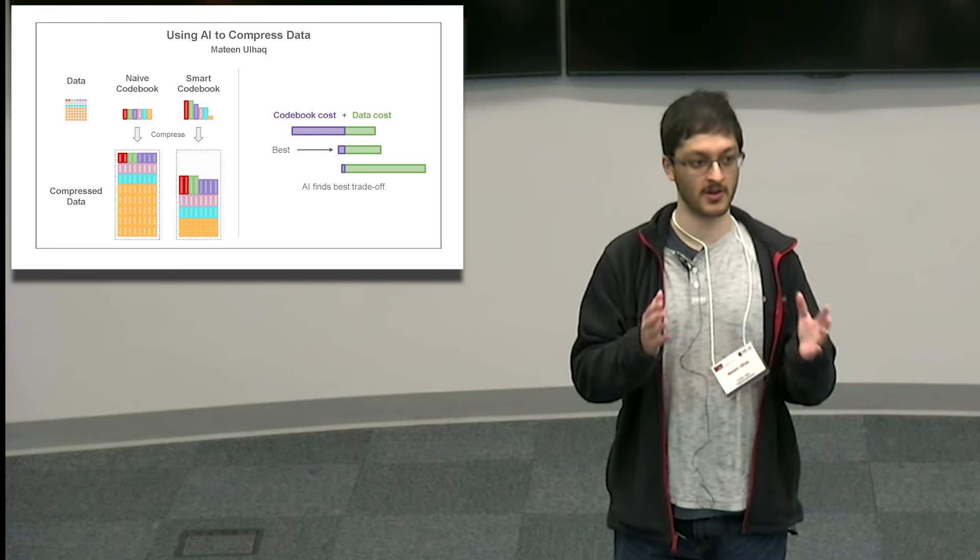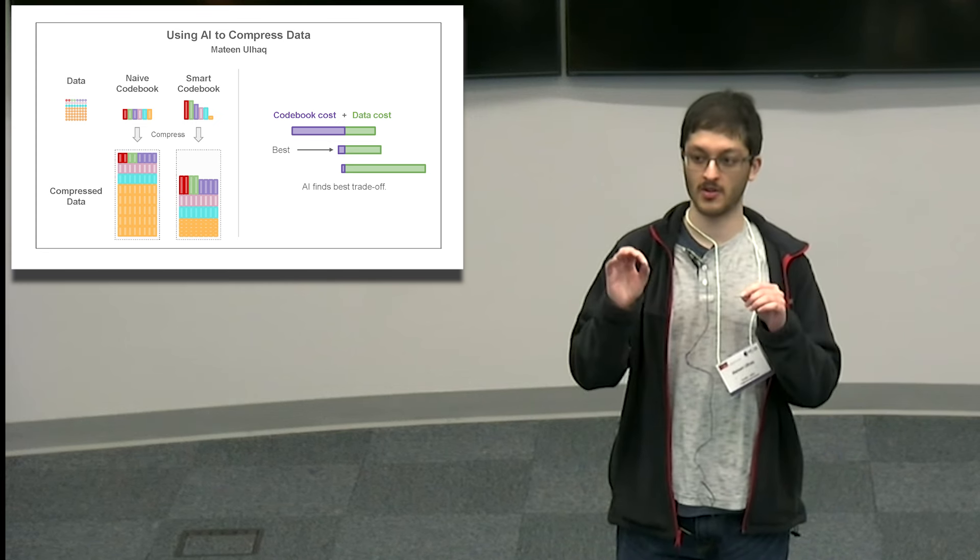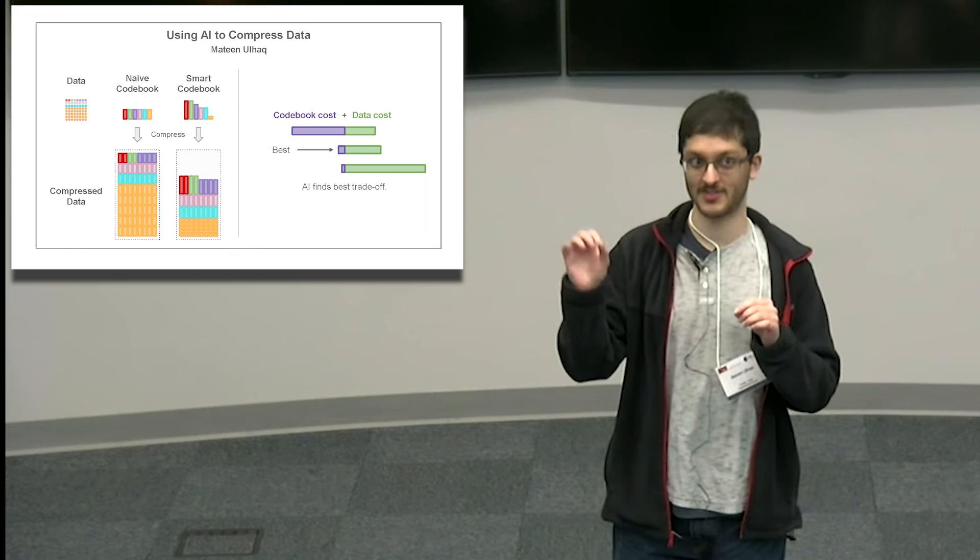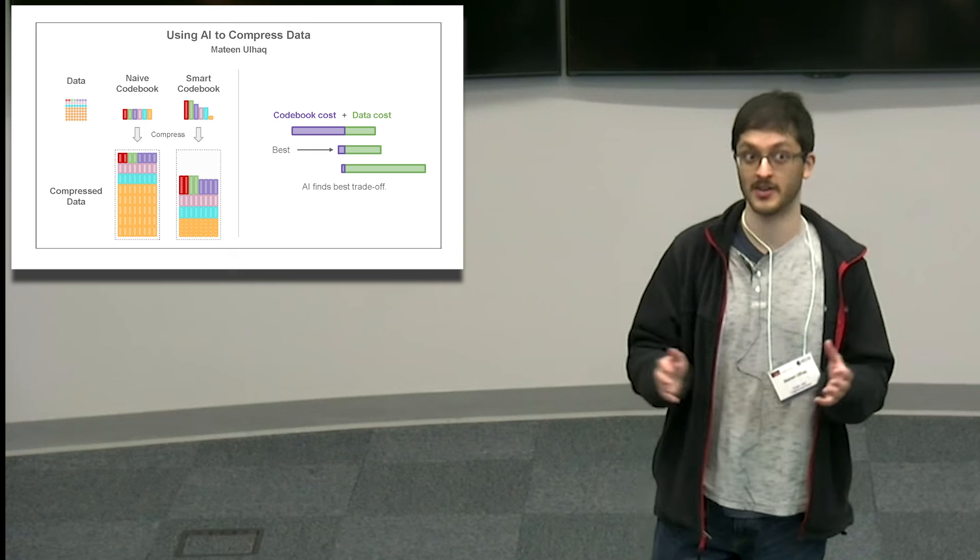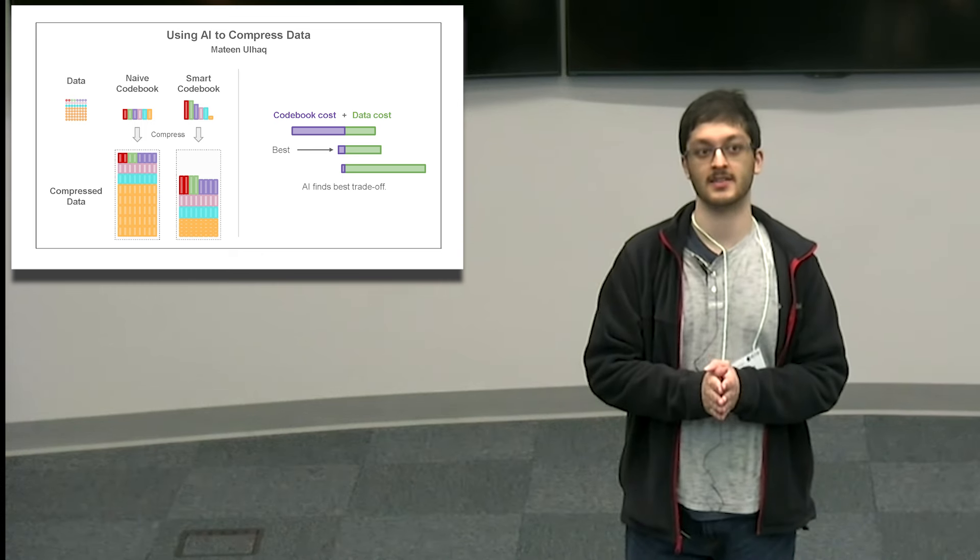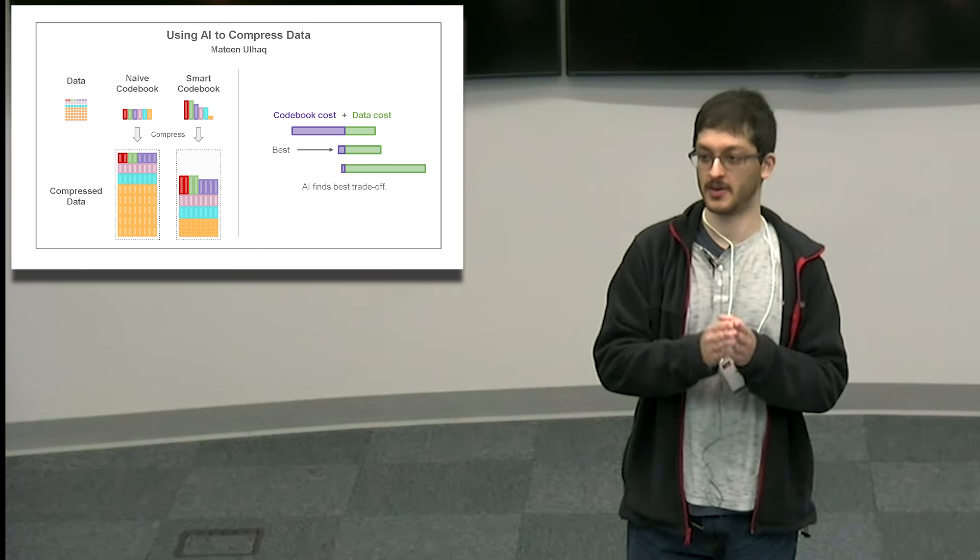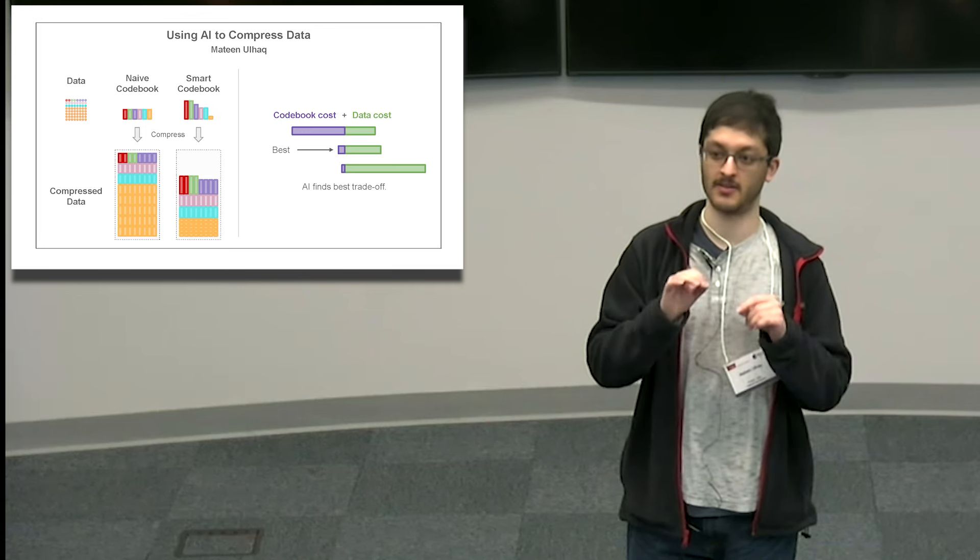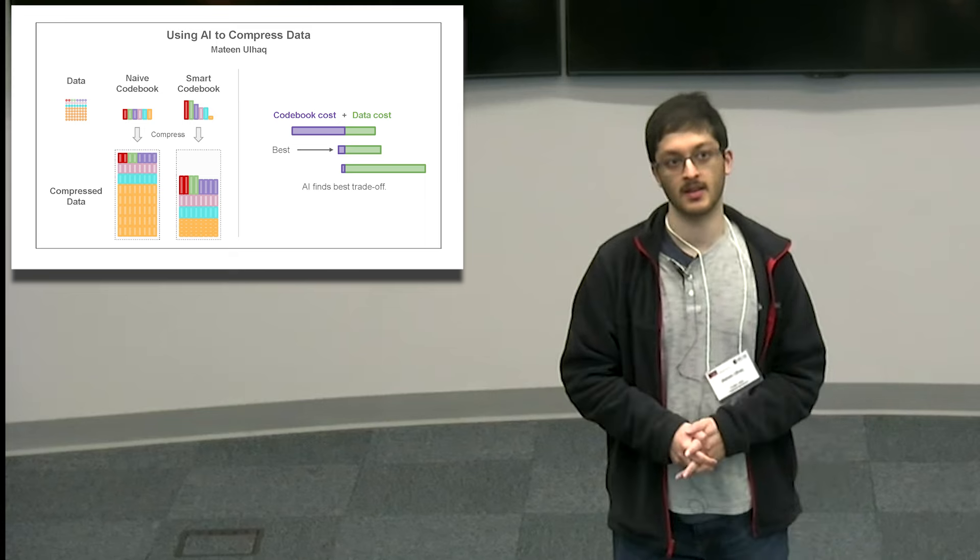On the other hand, we have the smart codebook, which uses smaller bars for more commonly occurring data. In this case, the yellow data occurs very frequently, so it's able to compress that down by representing it with a small bar, like an abbreviation.